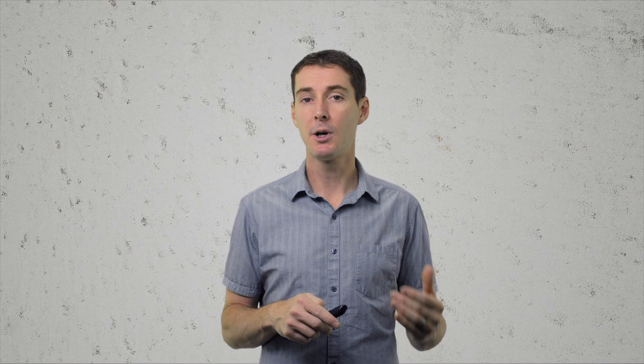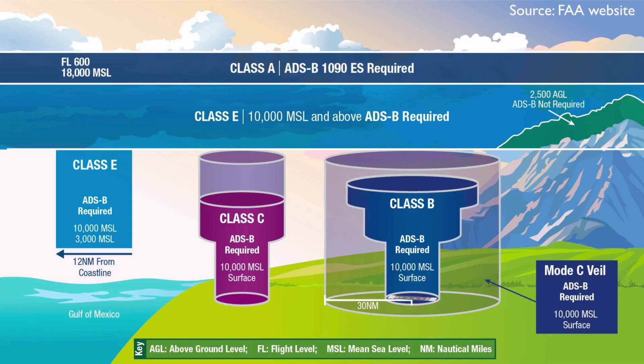One catch with ADSB at this stage is that it is not required in all airspace. ADSB is required in controlled airspace — Class Bravo, Charlie, and Delta, which are the bigger airspace areas around airports — and also in Class E airspace starting at 10,000 feet MSL. There's also a rule over the Gulf of Mexico. The big picture: above 10,000 feet MSL in Class E, and anywhere in Class B, C, or D and above.